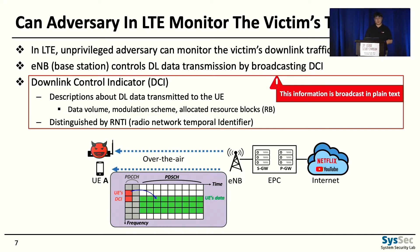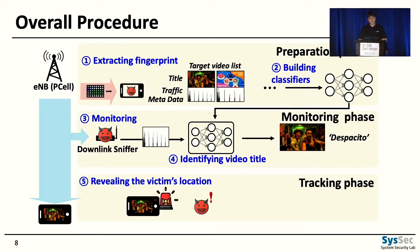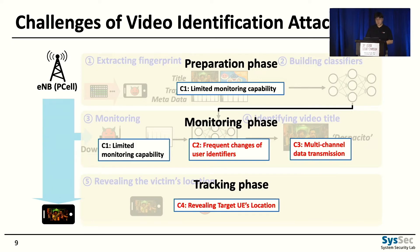Based on these two ideas, we developed the video identification attack in three phases. In the first phase, the attacker selects target videos, computes their fingerprints from recorded traffic, and builds a classifier. Next, the attacker monitors the downlink traffic of all users in the target cell and uses the classifier to identify which user is watching a target video. Finally, in the tracking phase, the attacker exposes the victim by forcing it to make a loud tone, enabling physical location. There are several challenges at each phase.